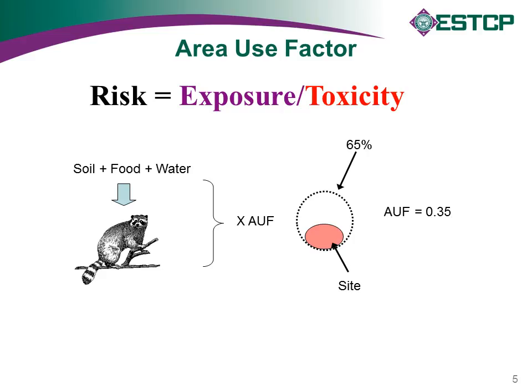If we want to consider site-specific factors, in the past all we could do was develop an Area Use Factor — AUF. We did something scientifically probably wasn't that valid: we would take our site as a small oval and compare it to the home range of the organism, which is much larger. We developed a unitless ratio considering the relative difference between the sizes of those two areas, and then we would cut that exposure by that ratio.